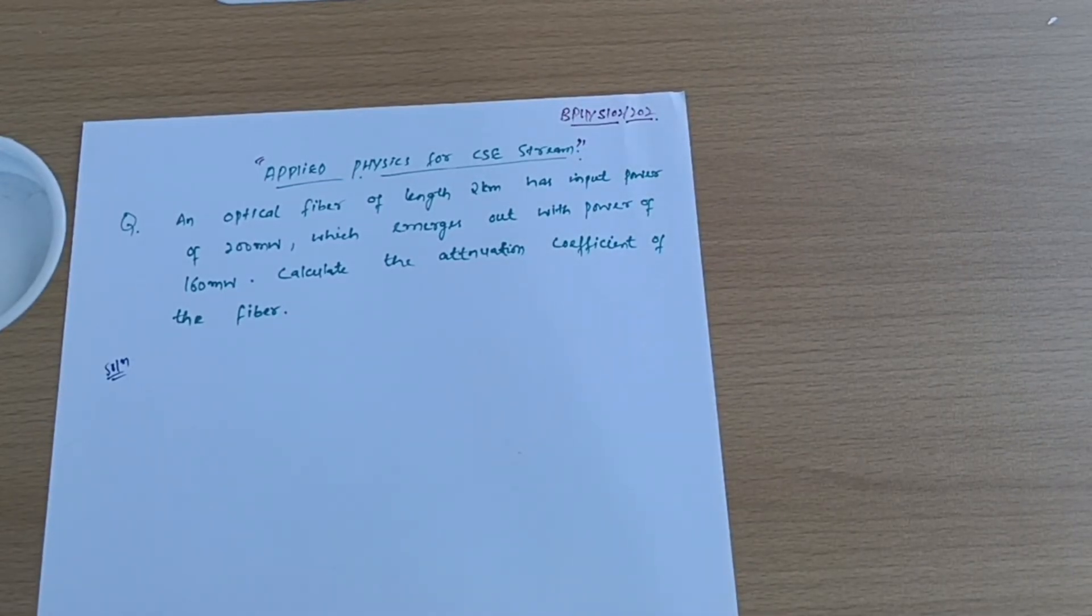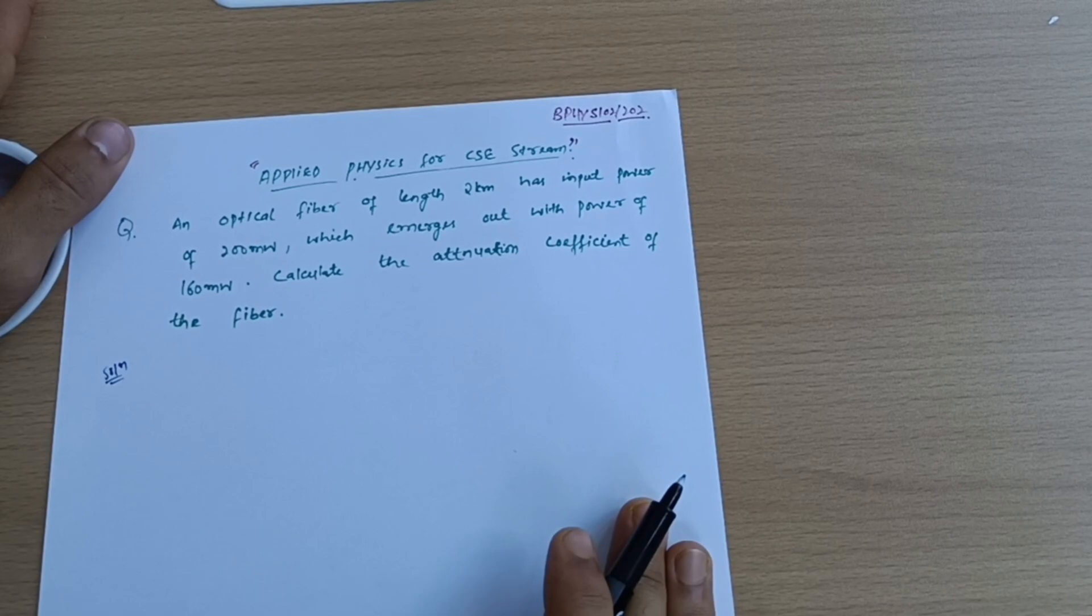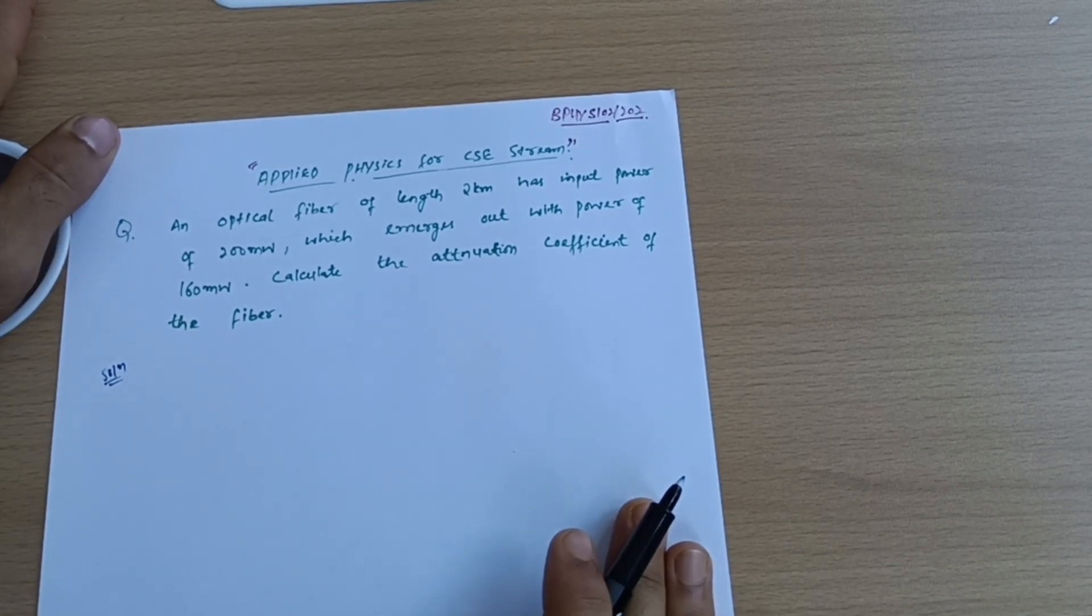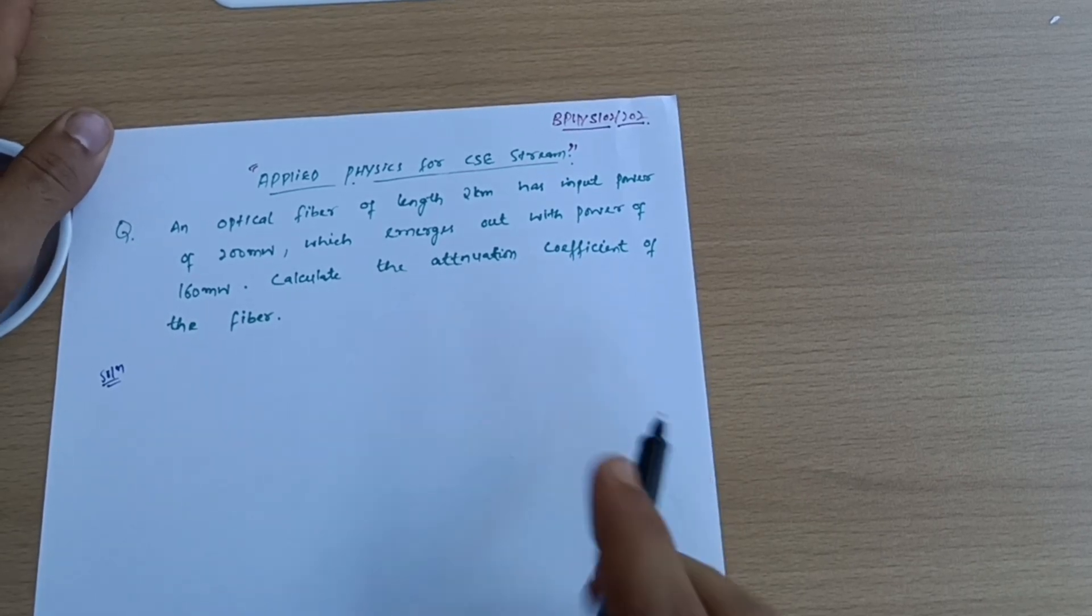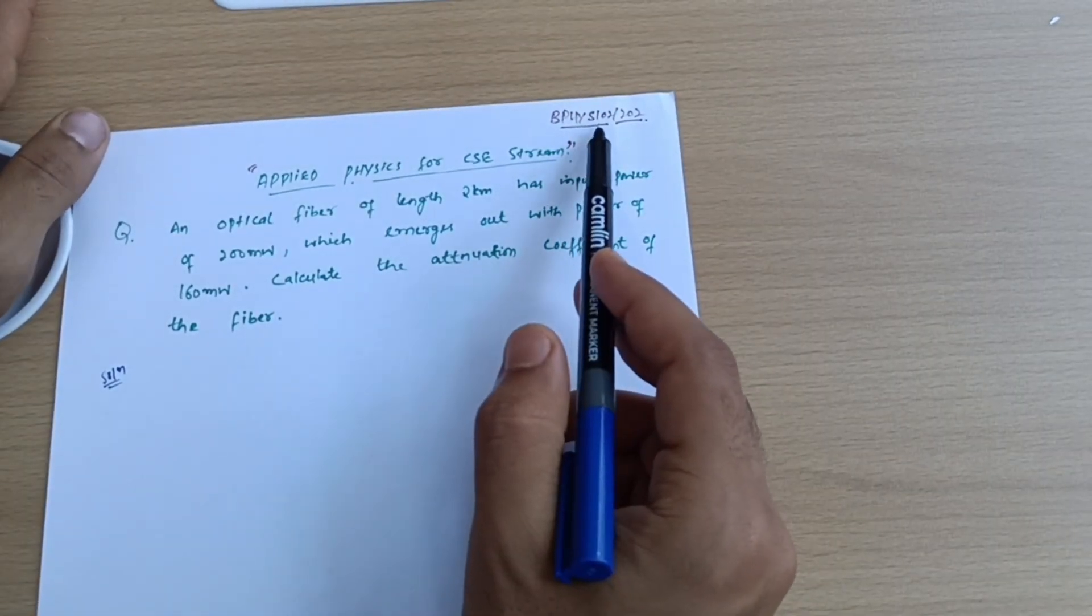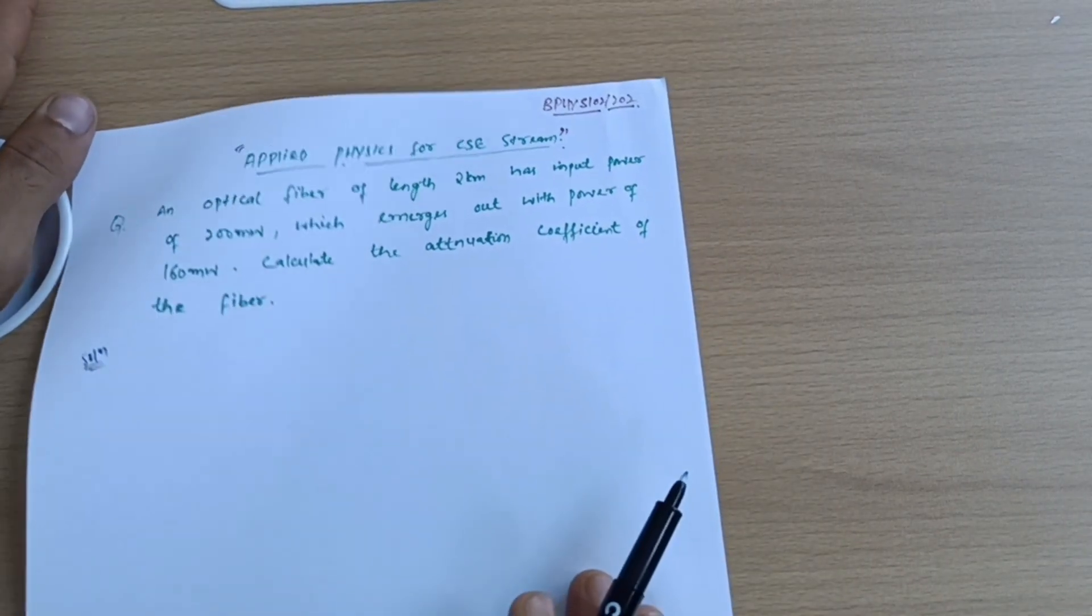Hello dear students, I hope you are all doing well. I am assuming that you have completed your theoretical portions from the physics subject. Today I will discuss the numerical part of the first chapter for the CSC stream students. Subject code is BPHYS 102 or 202, who are currently in second semester right now.